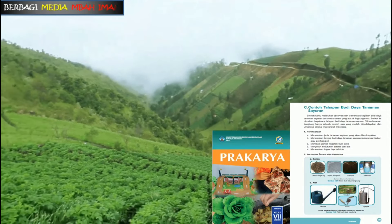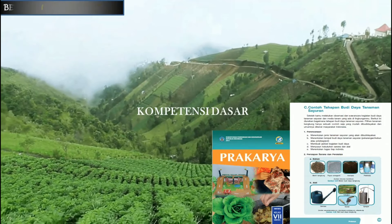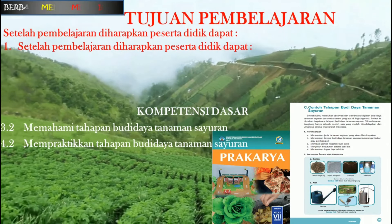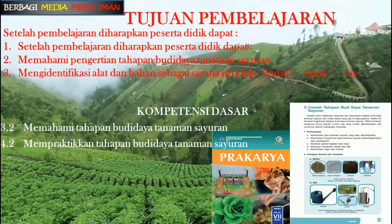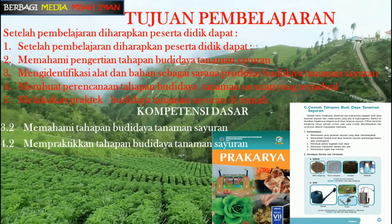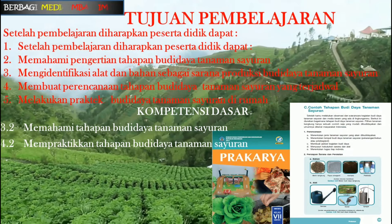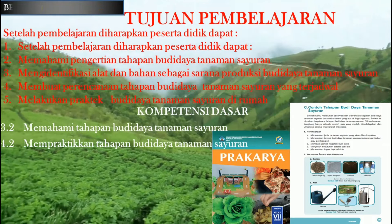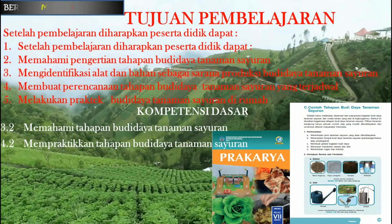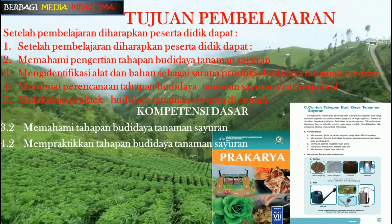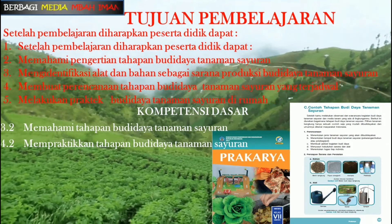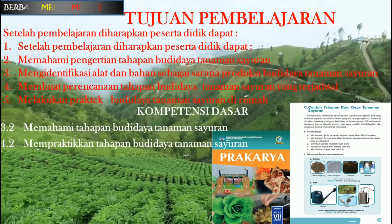Untuk pembelajaran prakarya kali ini, kompetensi dasar: 3.2 memahami tahapan budidaya tanaman sayuran, dan 4.2 mempraktikkan tahapan budidaya tanaman sayuran. Tujuan pembelajaran: pertama, siswa memahami pengertian tahapan budidaya tanaman sayuran; kedua, mengidentifikasi alat dan bahan sebagai sarana produksi budidaya tanaman sayuran; ketiga, peserta didik dapat membuat perencanaan tahapan budidaya tanaman sayuran yang terjadwal.